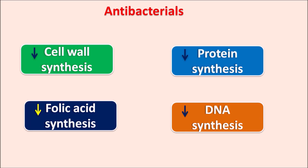Similarly, a few drugs produce sterilization — for example, polymyxins act as antibacterials. However, many antibacterials fall under those four categories. Now let us see what the different types of drugs are that can be classified under these categories.